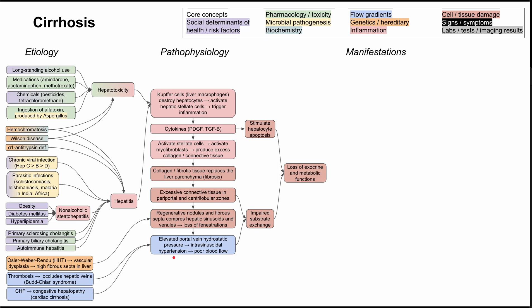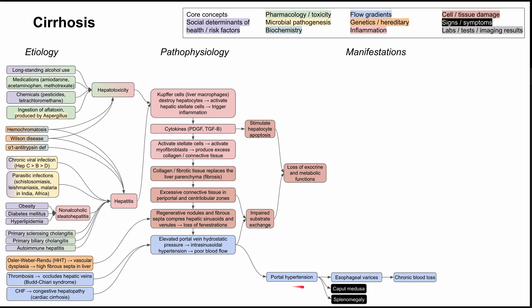Now for the manifestations. Starting with poor blood flow and high pressure in the intrasinusoidal space, you can have portal hypertension. That can lead to blood backing up into the GI tract, causing esophageal varices that can bleed and result in chronic blood loss. Portal hypertension also manifests as caput medusae — a swollen abdomen with bulging engorged veins. You can have splenomegaly when blood backs up into the spleen, and splenomegaly can trap thrombocytes, leading to thrombocytopenia.